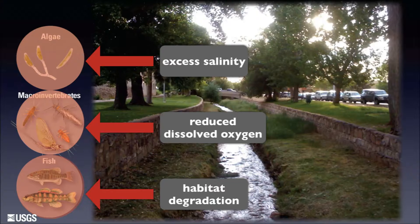To recap Shingle Creek: the algae community, combined with intensive monitoring data, revealed a salinity problem in winter. The macroinvertebrate community, combined with chemical monitoring data, revealed a dissolved oxygen problem in summer. The fish community, along with stream flow data, revealed an ongoing habitat problem over the last several years. This teaches us we must assess multiple biological communities and measure chemical and physical parts of the ecosystem at different times of year and different time scales.